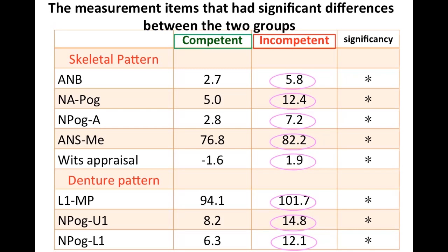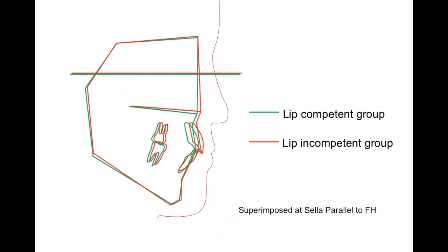Let me show you the results. These are the measurement items that had significant differences between the two groups of lip competence and lip incompetence in the cephalogram analysis. Since it is a little difficult to understand these items in a table, I will explain it with a profilogram in the next slide. This figure shows the average profilogram for each group of lip competent and lip incompetent subjects.